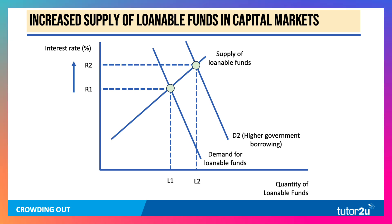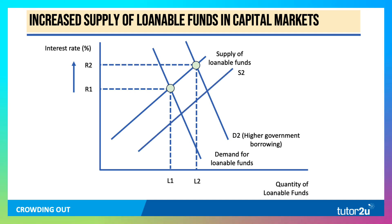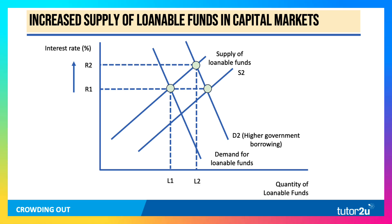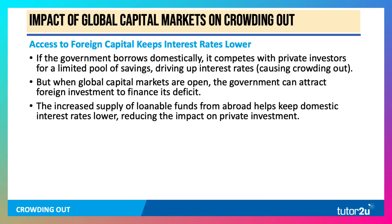But if access to overseas savings shifts out the supply of loanable funds to S2, then there's no obvious reason why interest rates necessarily should go up. More loanable funds can be traded at more or less the same interest rate.